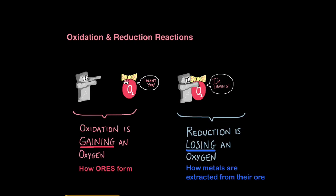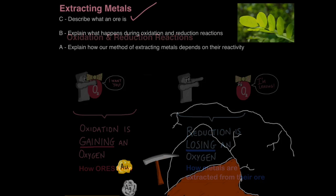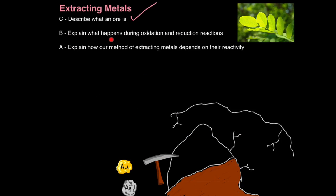So just remember, in these examples, metals become oxides through oxidation. So that's when they gain an oxygen, and we extract metals through the process of reduction, where they lose an oxygen. And that's how you explain what happens during oxidation and reduction reactions.